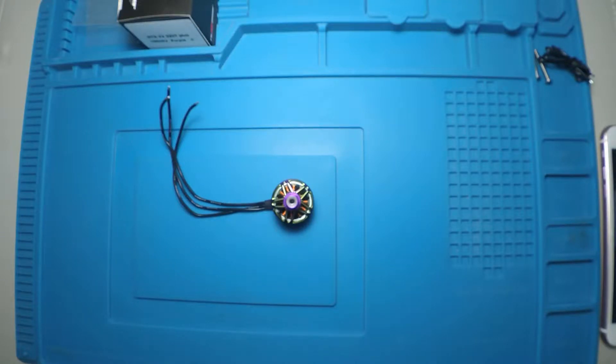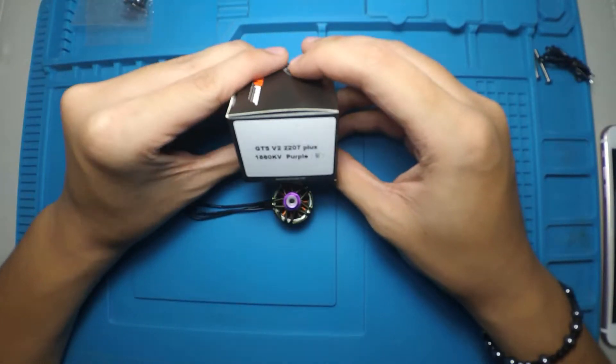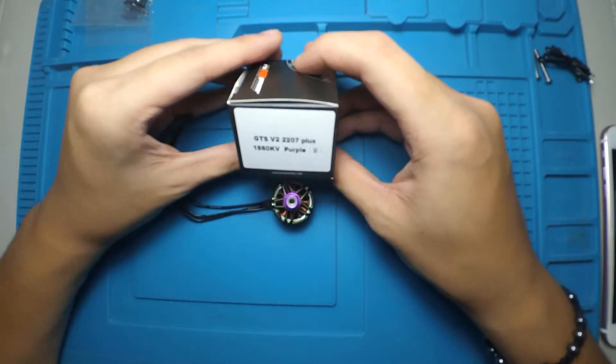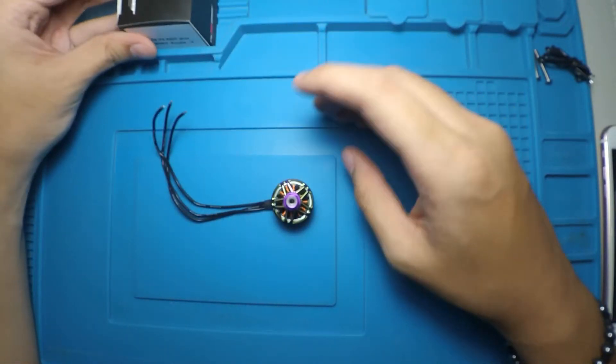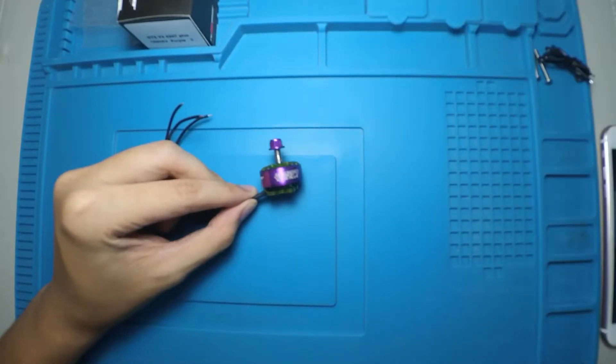Hello guys, this is Adrenaline FPV and today we are looking at a special motor. This is the RC and Power GTS V2 2207 Plus. This is a 2207.5 motor by RC and Power, and the cool thing about this motor is that it is actually exactly the same as the Vanover motor.